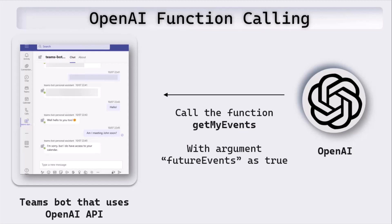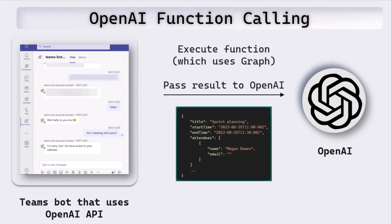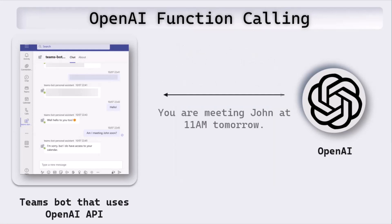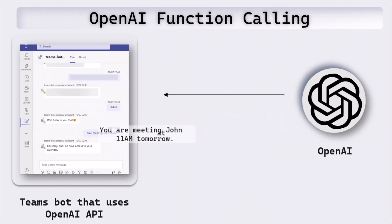Once we have that response from OpenAI, what we do in our code is go ahead and run the get my events function. That function basically uses Microsoft Graph, gets the information from the calendar, and then that raw JSON response with all the meeting details is passed back to OpenAI. You can see a sample response — it shows a particular meeting, and in the attendees, although it says Megan, there is an attendee John as well. That particular response is sent to OpenAI.